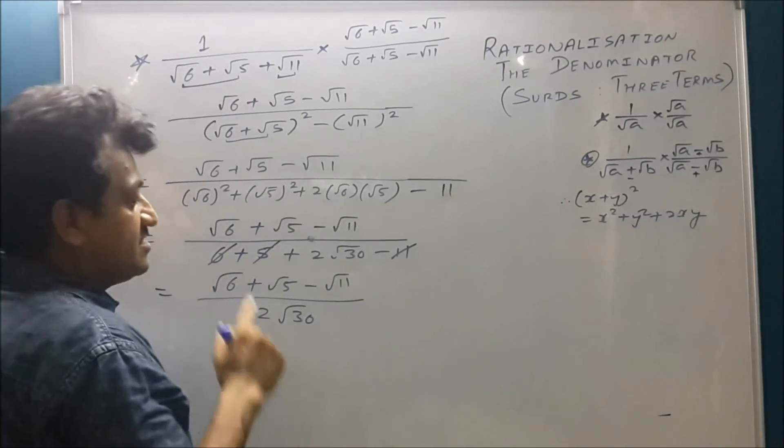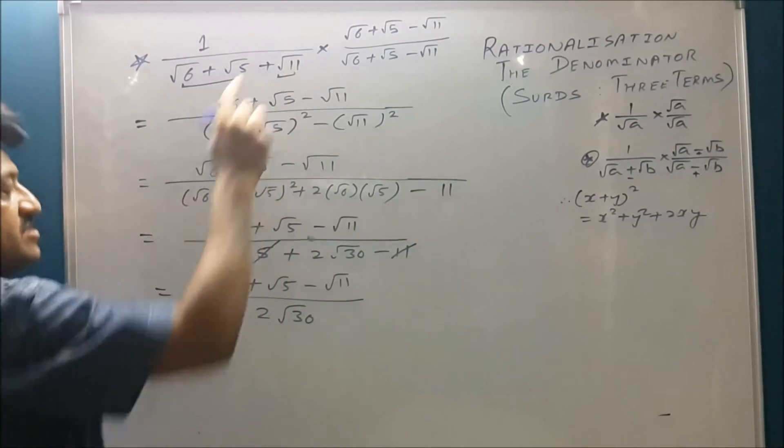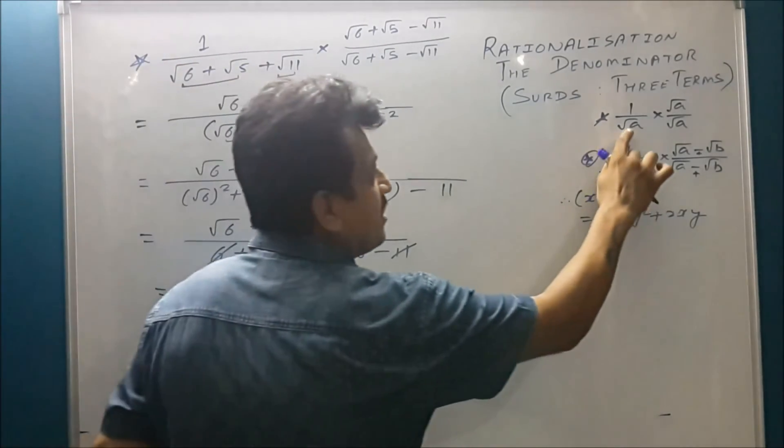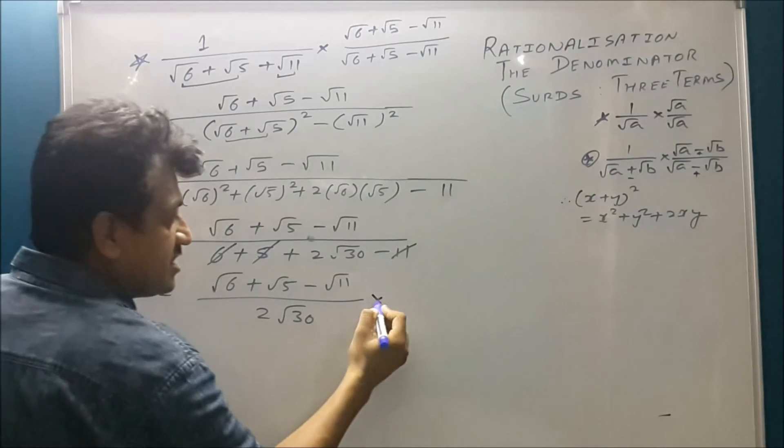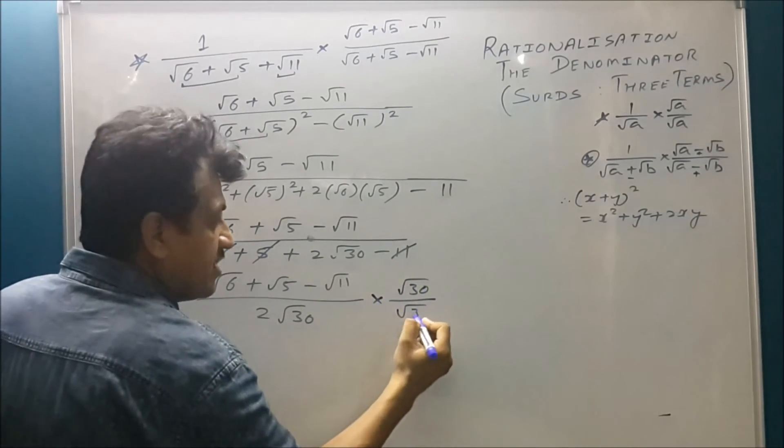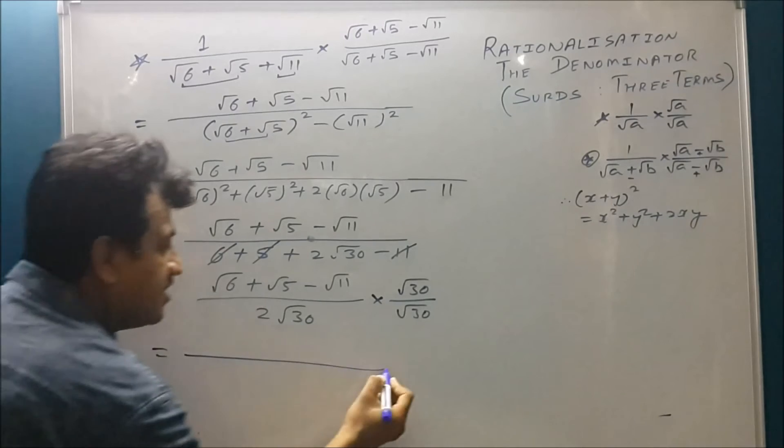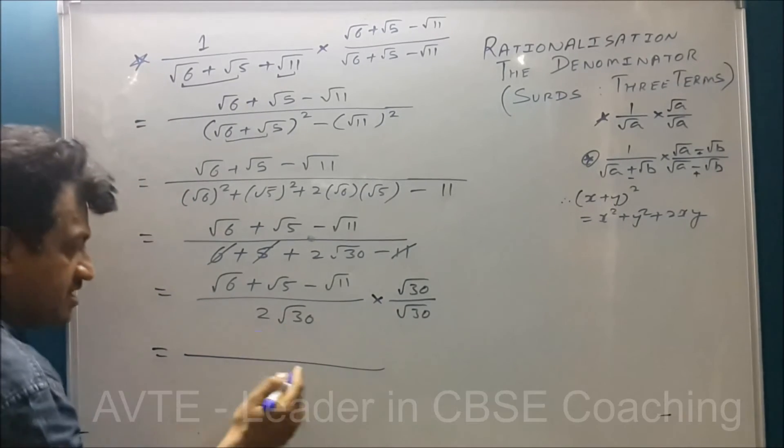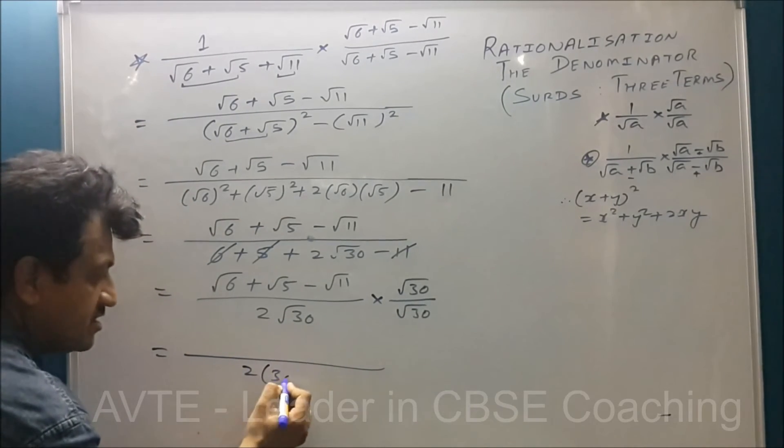Here you have to see that the trinomial part. Now you have to conclude this part. Now you have to conclude this as root 30 upon root 30. So in the denominator, root 30 into root 30 is 30. 30 into 2 is 60.